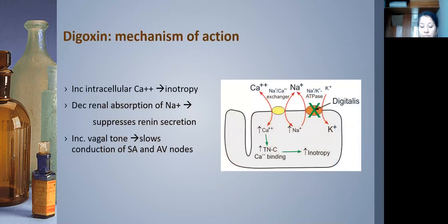Mechanism of action: digoxin inhibits the sodium-potassium ATPase pump in myocytes, which normally drives potassium into the cell and sodium out. With this pump inhibited, sodium accumulates intracellularly. Normally sodium is exchanged for calcium via a sodium-calcium exchanger, so when the pump is inhibited, calcium cannot exit the cell. Intracellular calcium concentration increases, causing positive inotropy. Additionally, digoxin decreases renal sodium absorption, suppresses renin secretion, and by increasing vagal tone decreases SA node firing and AV nodal conduction — the basis for its anti-arrhythmic use.